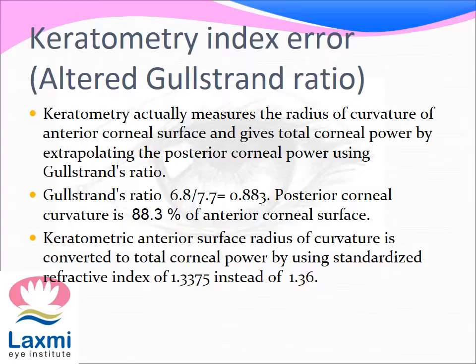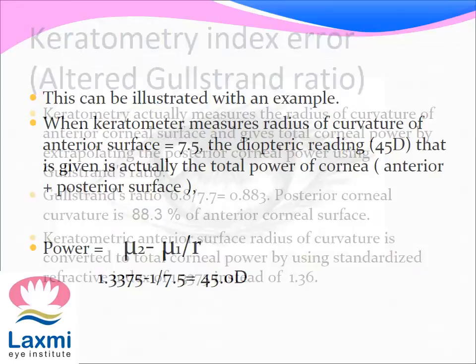Keratometry actually measures the radius of curvature of the anterior corneal surface and gives total corneal power by extrapolating the posterior corneal power using Gullstrand's ratio. If the posterior corneal surface is 6.8 mm and the anterior corneal curvature is 7.7 mm, then Gullstrand's ratio is 0.883 — meaning the posterior corneal curvature is 88.3% of the anterior corneal surface. The keratometric anterior surface radius of curvature is converted to total corneal power using a standardized refractive index of 1.3375 instead of 1.36.